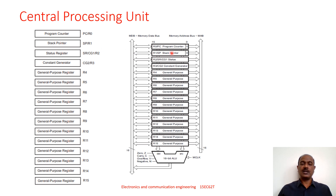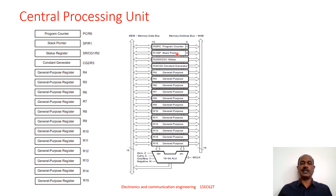The stack pointer R1 is used to access the stack. With the help of this stack pointer, the user can access the stack in his program. Again, the LSB of this stack pointer is hard-wired to 0, meaning whatever address is placed in the stack pointer will always be an even address.